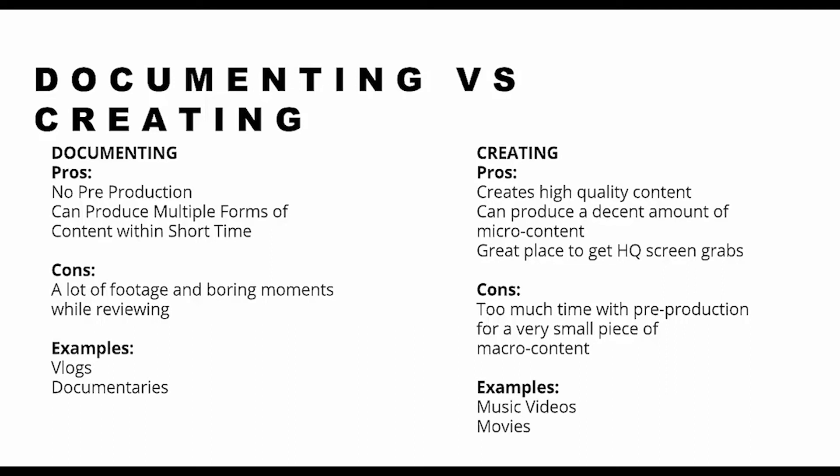Creating, on the other hand, involves a planning process. It allows you to create high-quality content. Examples are music videos and movies — they have a lot of time spent in pre-production: scripts, casting, table reads, getting the crew together. For you as an individual, it's planning the types of videos you want to create, doing some keyword research, getting the right camera or collaborating on the right interview. It creates high-quality content and great screen grabs because everything is planned. But you spend a lot more time in pre-production, and the amount of micro content you can create from it is not as vast compared to documenting.